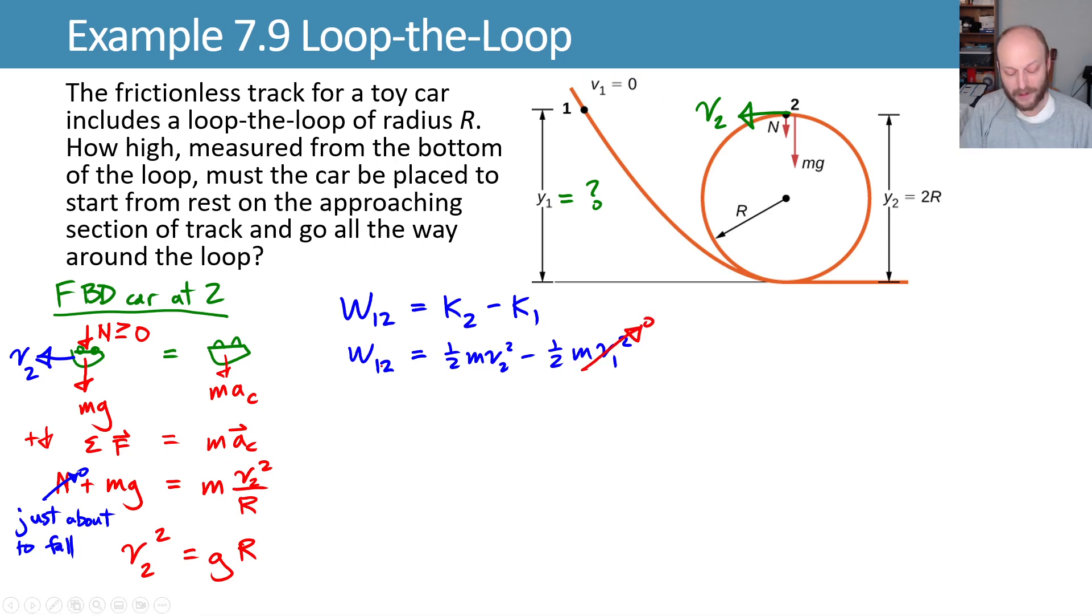Now let's look at the work being done on this. The only work that's coming into this is from gravity. The work done by gravity is negative mg times my final position minus my initial position. Now this equals 1/2 mv2 squared.